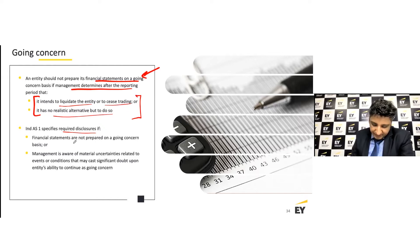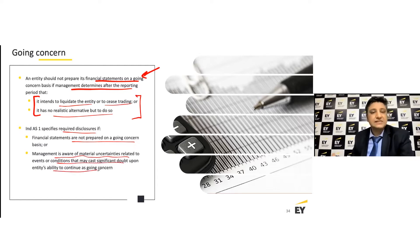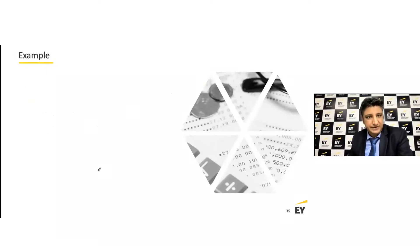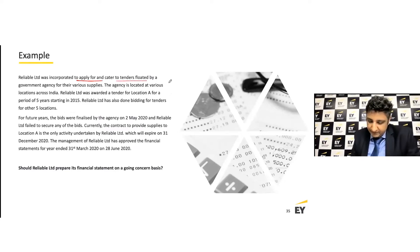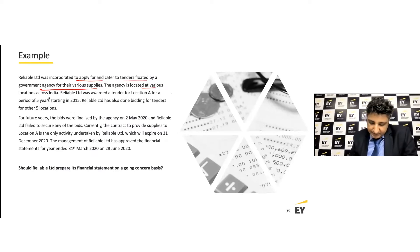Therefore there would be a requirement to prepare the financial statements on a liquidation basis. There are specific disclosures when you are not preparing your financial statements on a going concern basis, or when management is aware of any material uncertainties with respect to the business continuing as a going concern. Let's look at a small example: Reliable Limited was incorporated to apply for tenders floated by a government agency for various supplies across India. The company was awarded a tender for Location A for five years starting in 2015.